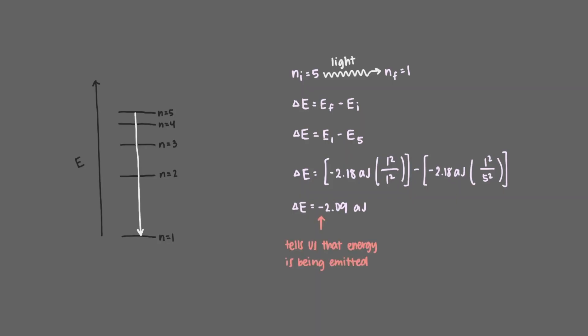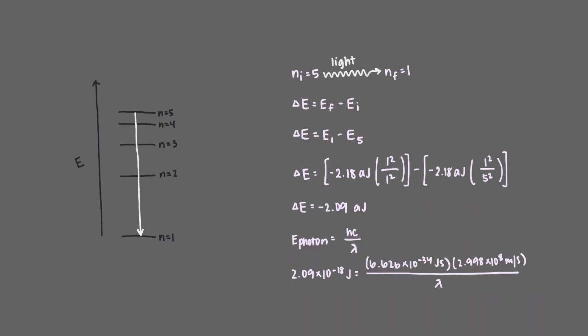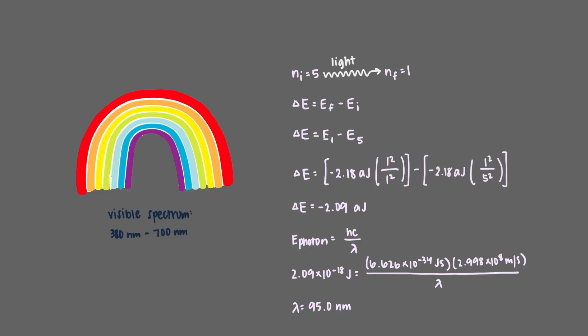When the answer is positive, it means that energy is being absorbed. To solve for wavelength, we only need the magnitude of this energy. By plugging in the energy in joules, Planck's constant, and the speed of light, our wavelength comes out to be 95.0 nanometers. So why is this not represented on the spectrum? This wavelength of light is not visible, so we don't see it — but the transition does happen.